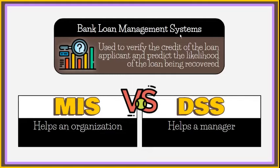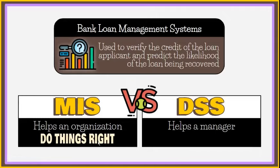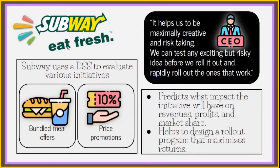An example of DSS is a bank loan management system, used to verify the credit of a loan applicant and predict the likelihood of the loan being recovered. The focus of a DSS is on making effective decisions. To differentiate it from MIS: MIS helps an organization do things right, while a DSS helps a manager do the right thing. Subway uses a DSS to evaluate initiatives such as bundle meal offers and price promotions, predicting their impact on revenues, profits, and market share, and helping design a rollout program that maximizes returns.